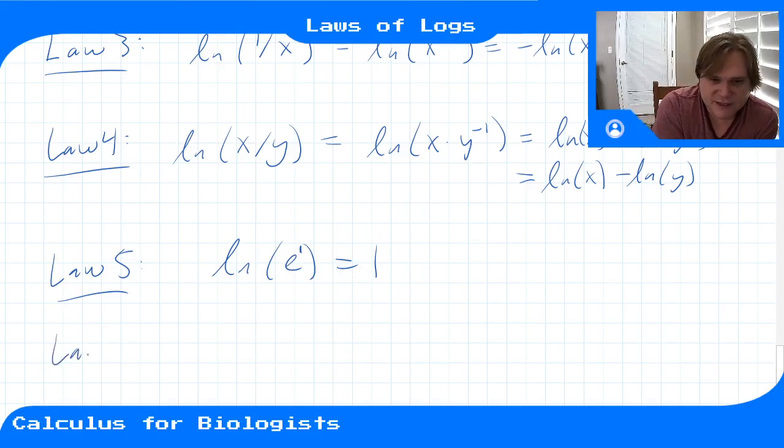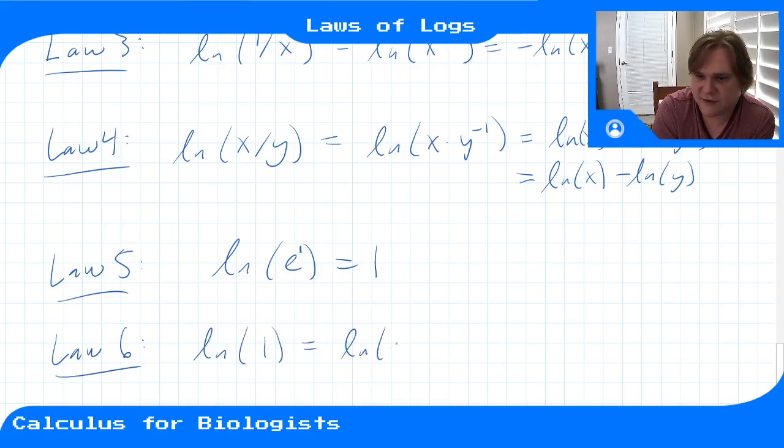And then law number 6 says that ln(1), we can think of that as ln(e^0). That's our law of exponents. That e^0, any number to the 0 power gives us 1. So then that tells us that this has to be 0.